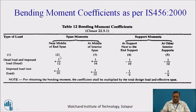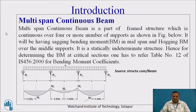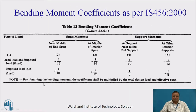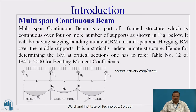If you just see the figure, you will find M1 is the first one near the middle of end span. M2 is also near the middle of the end span. At the middle of the interior span, the coefficients are 1/16 and 1/12, at the locations shown — this is M2.